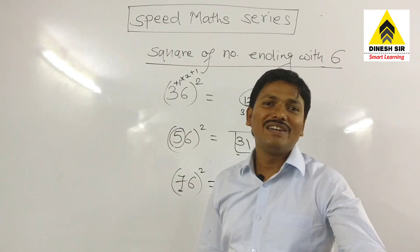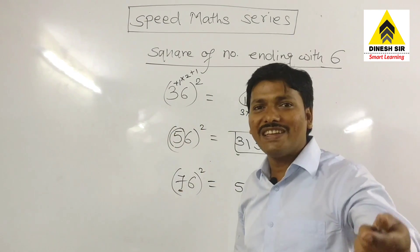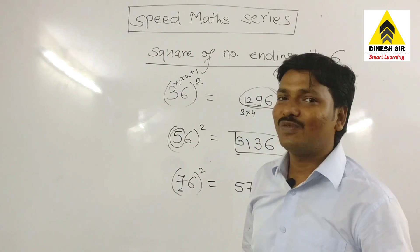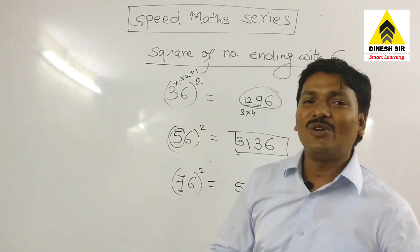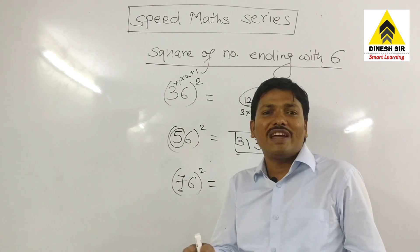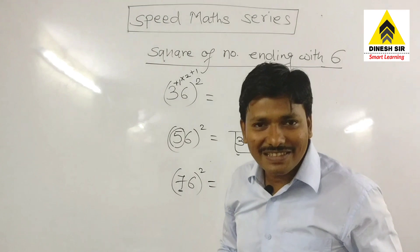So taking the square of any number which ends with 6 is very easy with these types of tricks. Hope you have learned how to take squares of numbers which end with 6. Thank you very much.